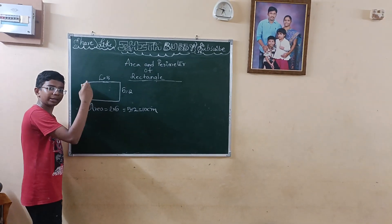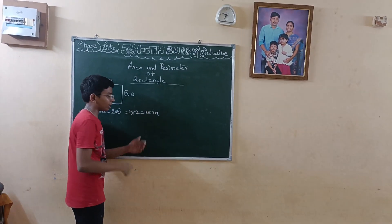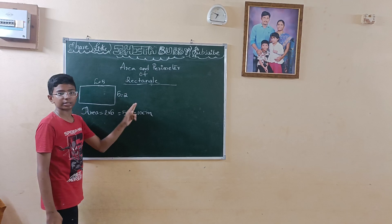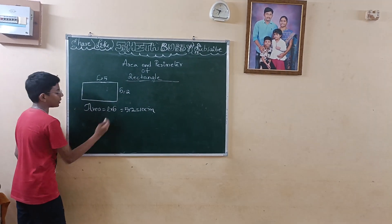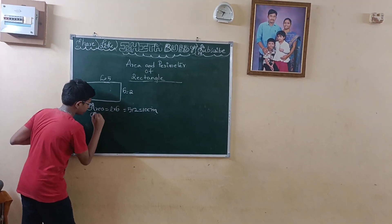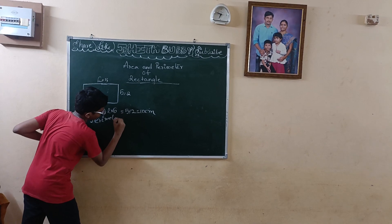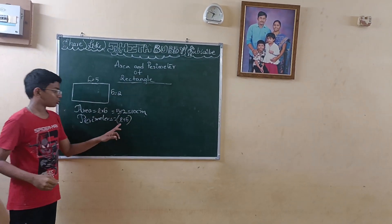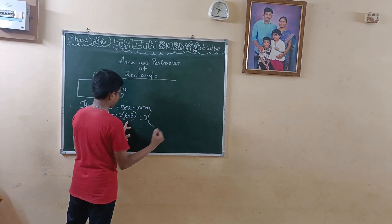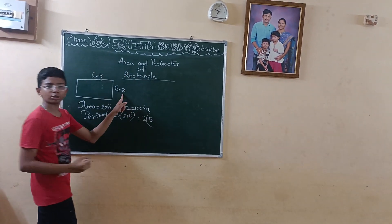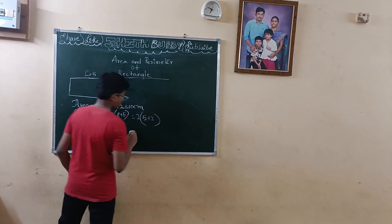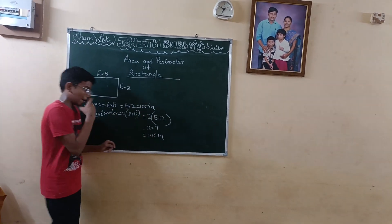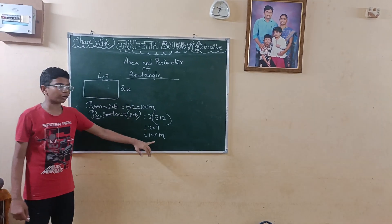In the question, they will give meters or centimeters, and we need to write the answer accordingly — for example, 10 centimeters. Now, what is the perimeter of this rectangle? Perimeter equals 2 into L plus B. L equals 5, B equals 2. So 5 plus 2 is 7, and 2 into 7 equals 14 centimeters. Area equals 10 centimeters and perimeter equals 14 centimeters.